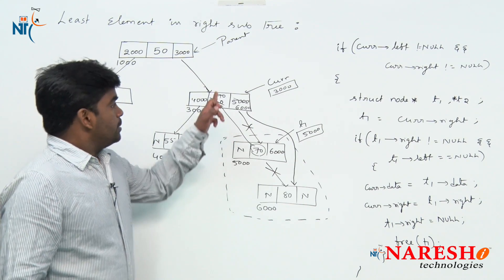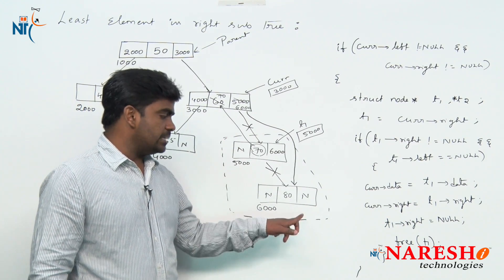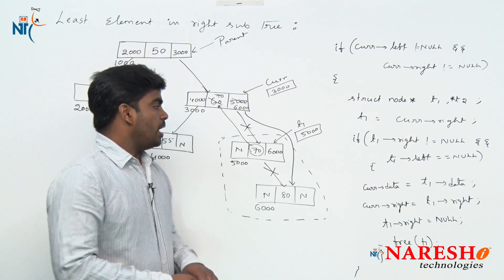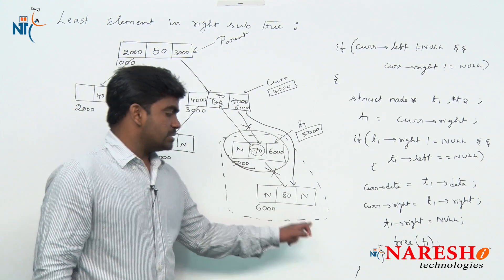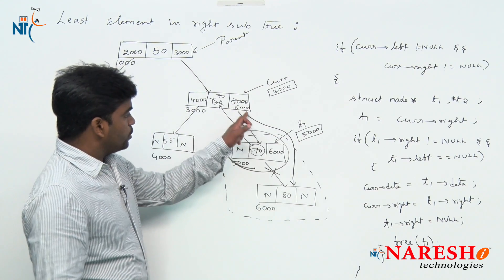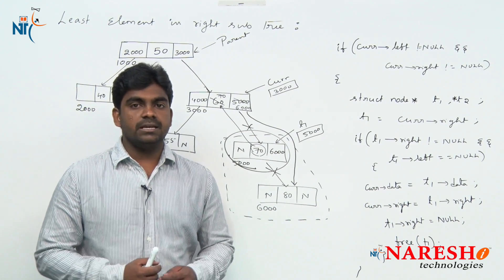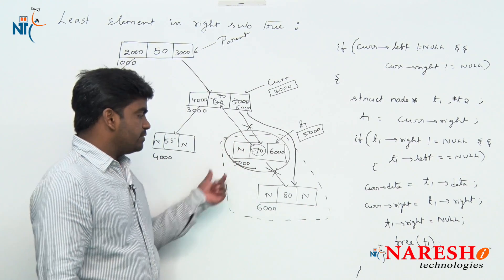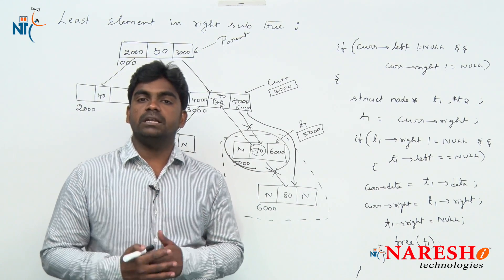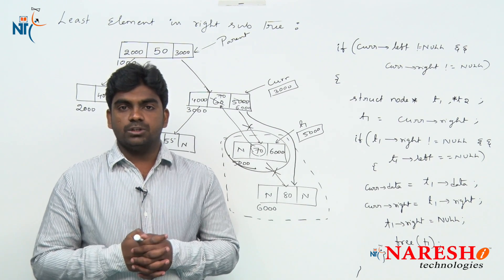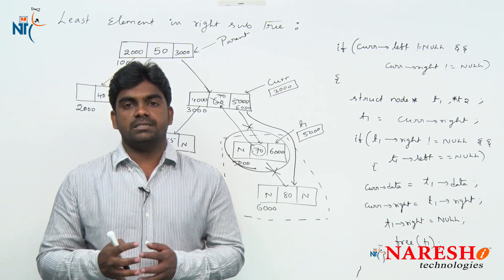Before deleting the node in the right subtree, if the right child has another right child, you will face problems. You cannot delete by placing null directly because you will lose other connections. First connect the child node, then separately delete the original node. If the right child is having left children, we must move all the way down to find the least element and then perform the deletion. That will be covered in the next session. Please subscribe to the Nareesh IT channel. Thank you.